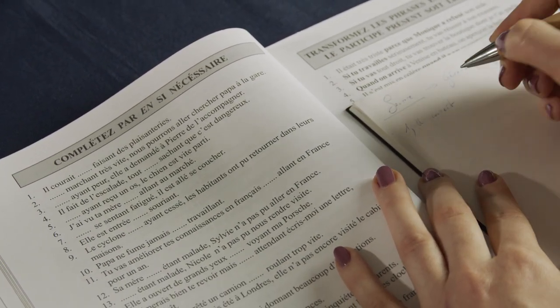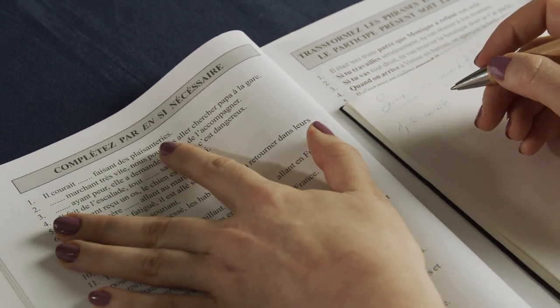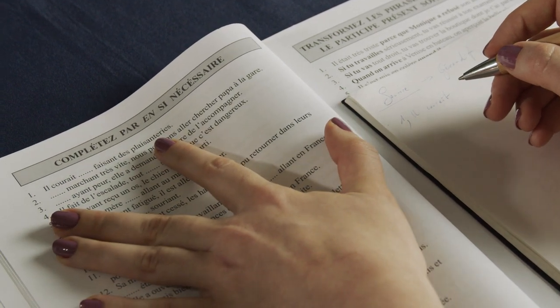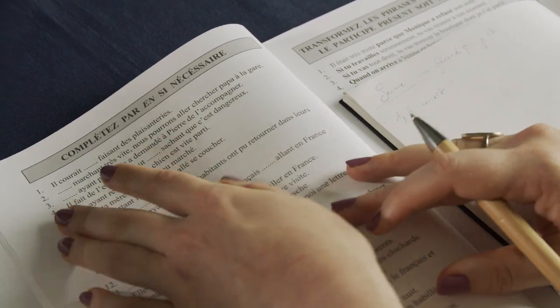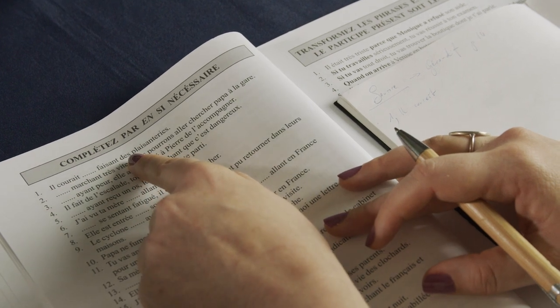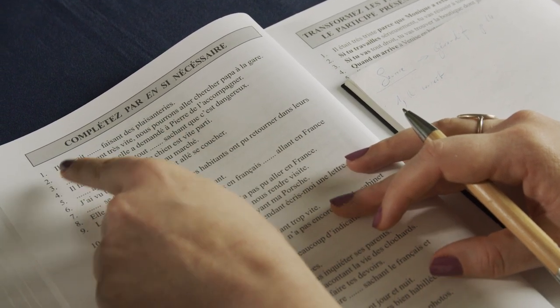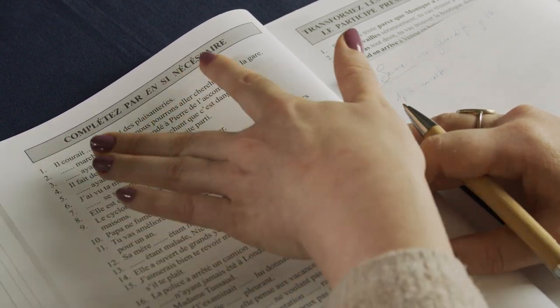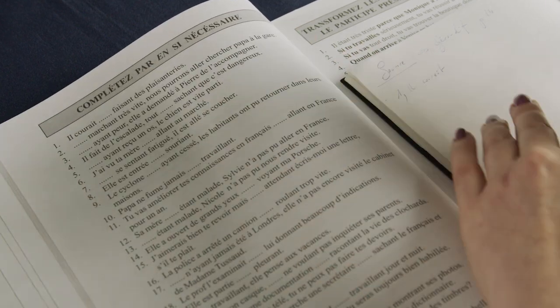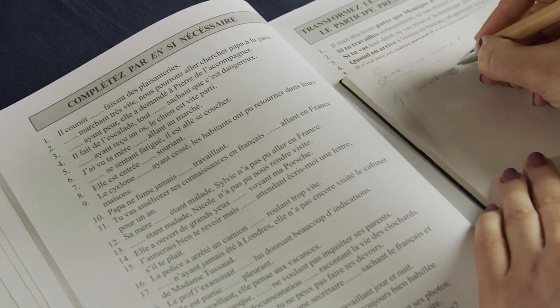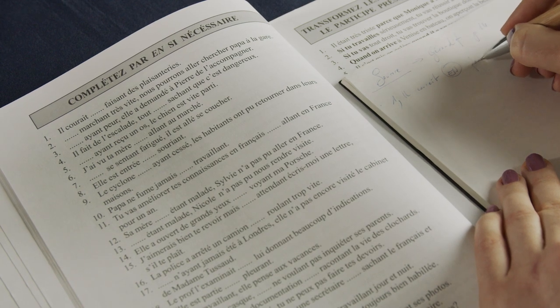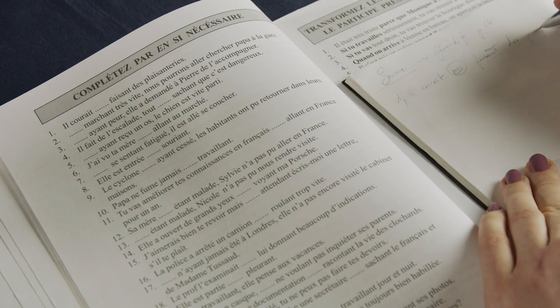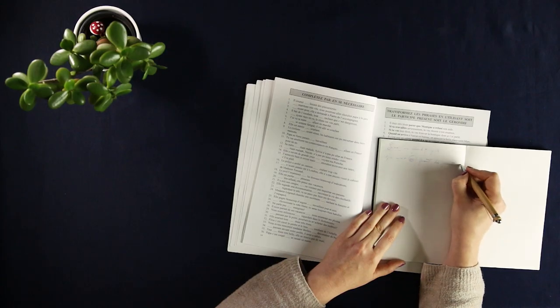Okay, so we're using Sourire, gérondif, this is page 14. Number one: Ils couraient faisant des plaisanteries. So he was running and making jokes. We have no other subject in this sentence, only ils, and both of these things happen at the same time, so gérondif, we use en. Ils couraient en faisant des plaisanteries.